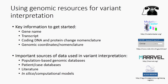This presentation does not include diving into the details of variant interpretation or each of the resources available to a clinician — other ClinGen presentations cover those goals. But key information needed when searching for data relevant to variant interpretations includes the gene name, the transcript, coding or cDNA and protein change nomenclature for sequence variants, and the genomic coordinates or nomenclature. Most of these details should be included on a lab report, although for sequence variants, genomic coordinates may not always be included. The resources on the slide can help you obtain genomic coordinates if needed, and always call the lab to clarify anything that doesn't make sense.